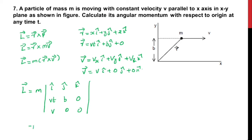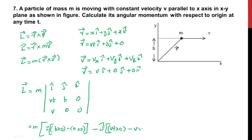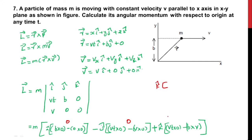Expanding the determinant: the î component is m times (b·0 minus 0·0), which equals 0. The ĵ component is minus m times (vt·0 minus v·0), which also equals 0. The k̂ component is m times (vt·0 minus b·v), giving k̂ times (0 minus bv). So the x and y components are zero, and the k̂ component gives minus bv.